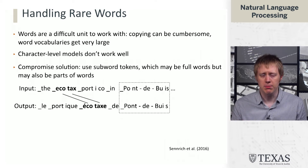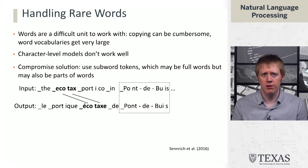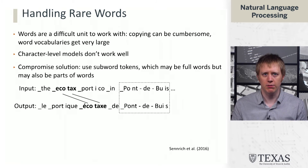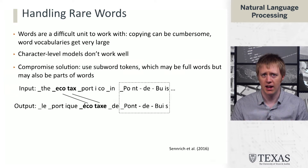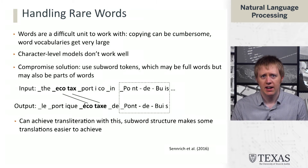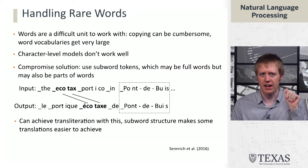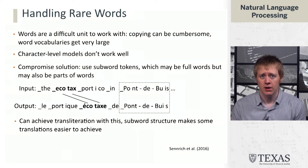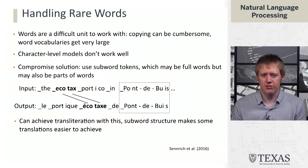These tokens might be whole words or they might just be parts of words. In this example we've seen before — ecotax, portico, and pont de buis — we have a couple of words where an underscore indicates that it's a unit beginning a word. So we've broken ecotax into two pieces: underscore eco at the beginning, and then tax, which doesn't start with an underscore, so we know that's continuing the previous segment. Portico and pont de buis also get chunked up similarly. There's also a similar chunking on the output side, and the nice thing is that ecotax can now be directly mapped into ecotax.